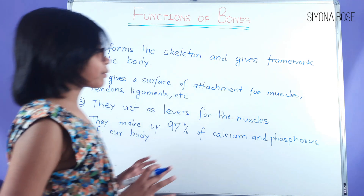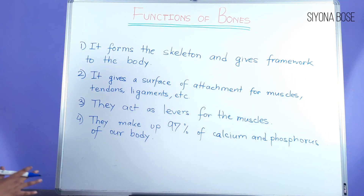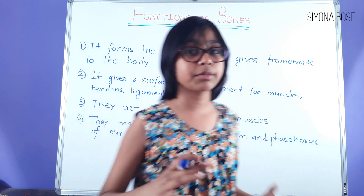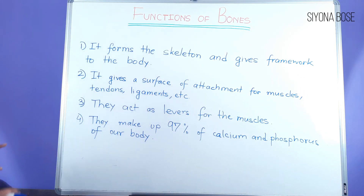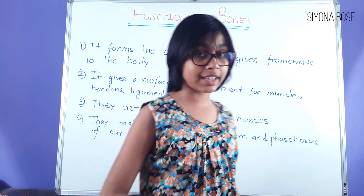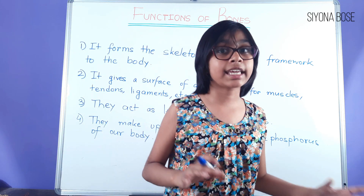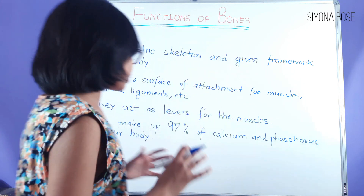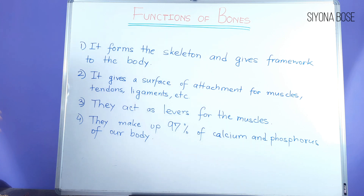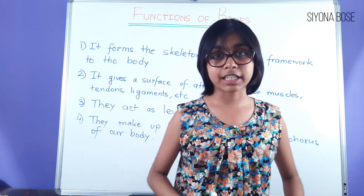This is evident from the composition of bones discussed previously — one-third of bone is connective tissue and two-thirds are calcium salts, including mainly calcium phosphate, then calcium carbonate, traces of other salts, and hydroxyapatite. That's why bones make up 97% of the calcium and phosphorus of our body.